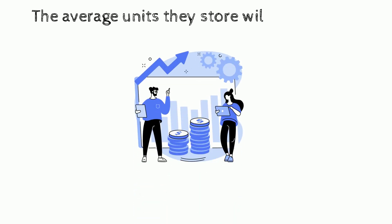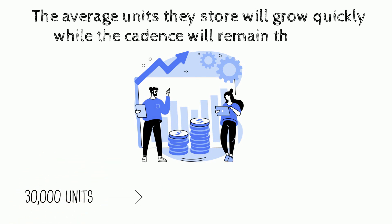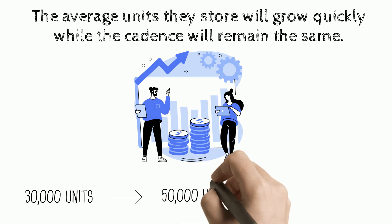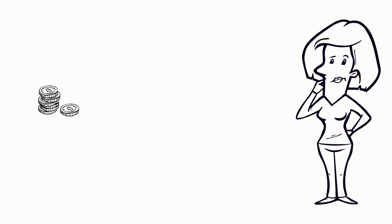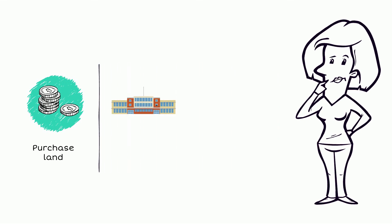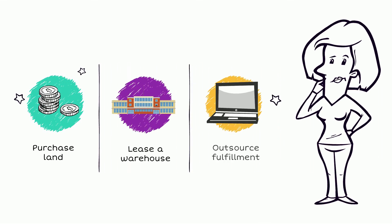The average units they store will grow quickly while the cadence will remain the same. The last run of their main SKU was 30,000 units. They're about to ship in another 50,000 units, and their next run will be 75,000 units. They plan to continue to grow at that pace, so they are looking into whether they should purchase land, lease a warehouse, or outsource fulfillment to keep up with demand.